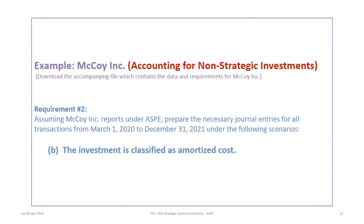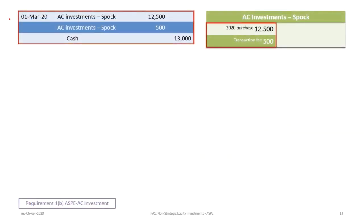Now we'll move on to Requirement 2B, where the investment is classified as amortized cost. We begin on March 1st with the purchase of the investment. This time we use a different account name: Amortized Cost, or AC, Investments — Spock. We debit AC Investments — Spock for $12,500, which is the purchase price of 5,000 shares at $2.50.